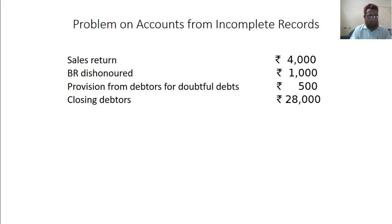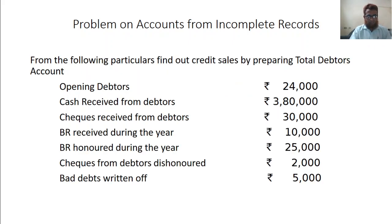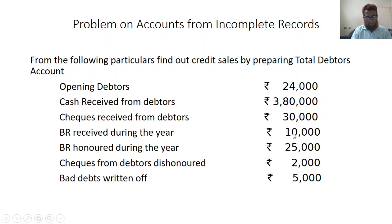We will explain where each item appears in the answer. Opening debtors should be written on the debit side of the total debtors account as balance brought down — that is Rs. 24,000 debited. Cash received from debtors is credited. Cheque received from debtors is also credited. Bills receivable received during the year, Rs. 10,000 — these three items are credited to the total debtors account as: by cash account, by bank account, by bills receivable account.